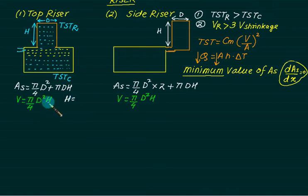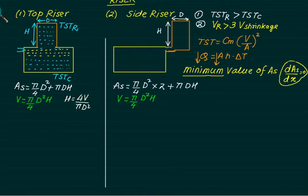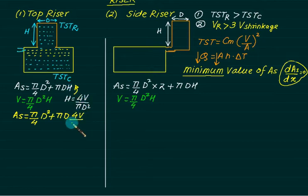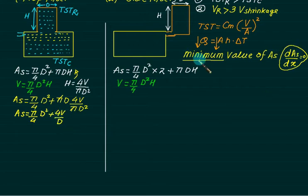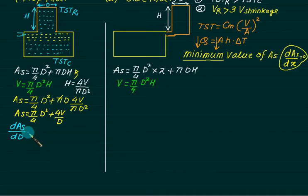Now we want to minimize A_s. To minimize, we differentiate surface area with respect to diameter and set equal to zero: dA_s/dD = 0. The derivative of the first term gives (π/2)D, and the derivative of 4V/D gives −4V/D². Setting the sum equal to zero: (π/2)D − 4V/D² = 0. This gives the condition for minimum area. We then solve for V and substitute V = (π/4)D²H to find the relation between D and H.